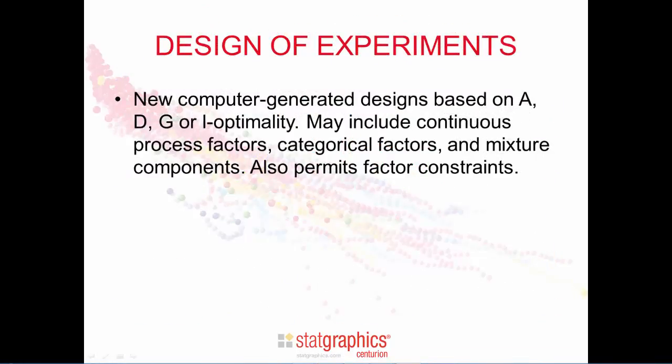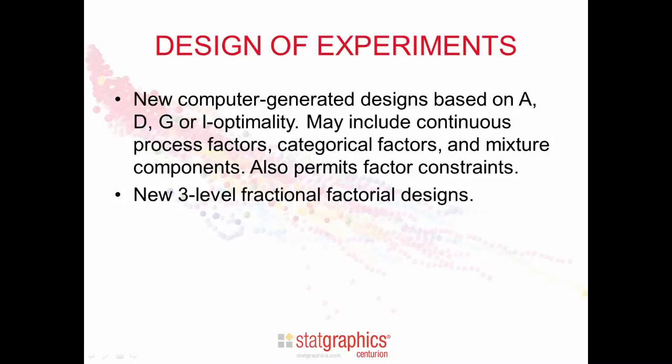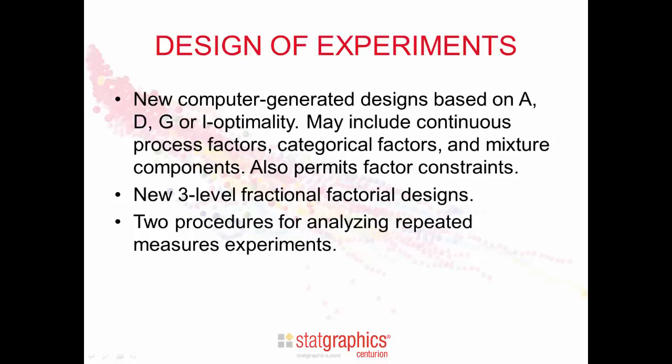Another area where version 17 adds significant capabilities is the design of experiments. New computer-generated designs are available based on A, D, G, or I optimality. The user specifies the model to be fit, the number of runs that can be performed, and any constraints that might exist on the factors. The program then generates a set of optimal runs. We've also added new three-level fractional factorial designs to the screening section and two new procedures for analyzing repeated measures experiments.